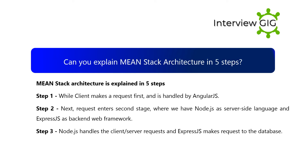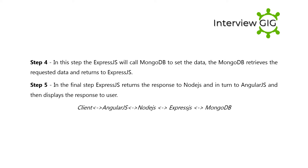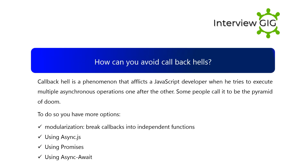Can you explain MEAN stack architecture in five steps? Step 1: The client makes a request, which is first handled by Angular.js. Step 2: The request enters the next stage where we have Node.js as the server-side language and Express.js as the back-end web framework. Step 3: Node.js handles the client-server requests and Express.js makes a request to the database. Step 4: Express.js calls MongoDB to fetch the data; MongoDB retrieves the requested data and returns it to Express.js. Step 5: Express.js returns the response to Node.js, which in turn passes it to Angular.js, and the response is displayed to the user.